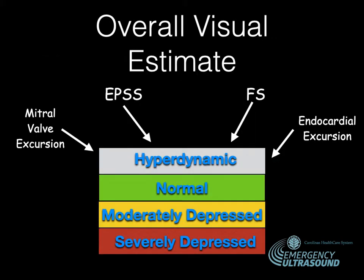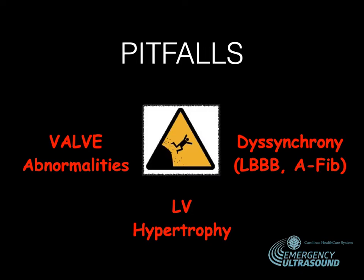Putting all of that together — mitral valve annular planar excursion, EPSS, fractional shortening, and endocardial excursion — we classify cardiac function as hyperdynamic, when the walls of the left ventricle are nearly coming together, normal, moderately depressed, or severely depressed. Some pitfalls include valve abnormalities and dyssynchrony. It's very hard to estimate an ejection fraction if the patient is in AFib, or if you have left ventricular hypertrophy.